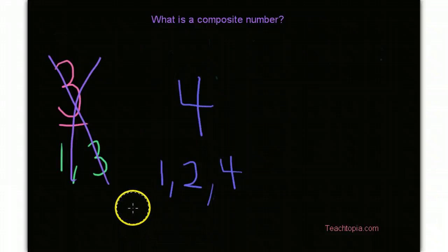Therefore, it is a composite number. It fits the definition of any number that is positive, that is divisible by more than just one in itself because it's also divisible by two. Now, let's look at another number.